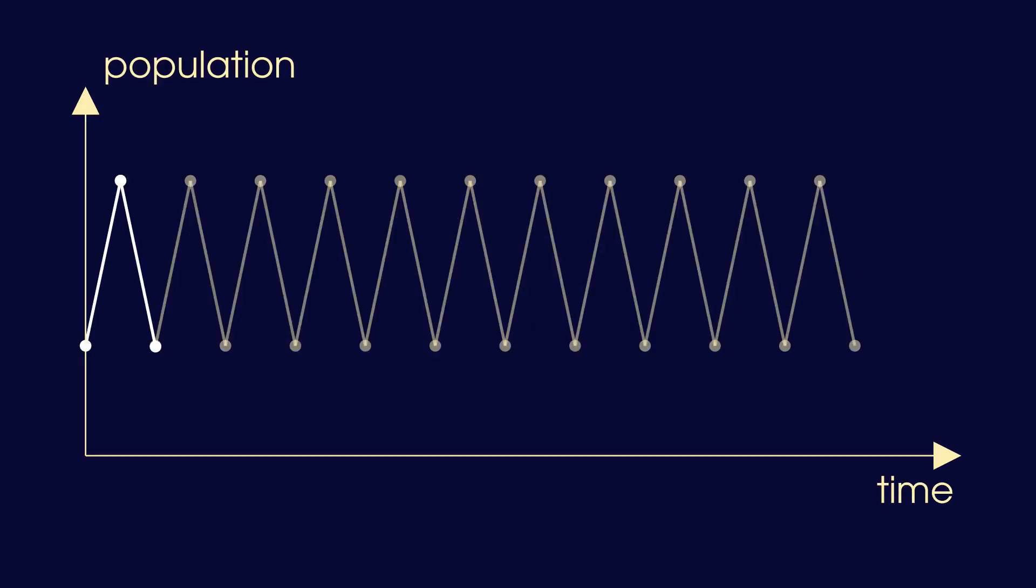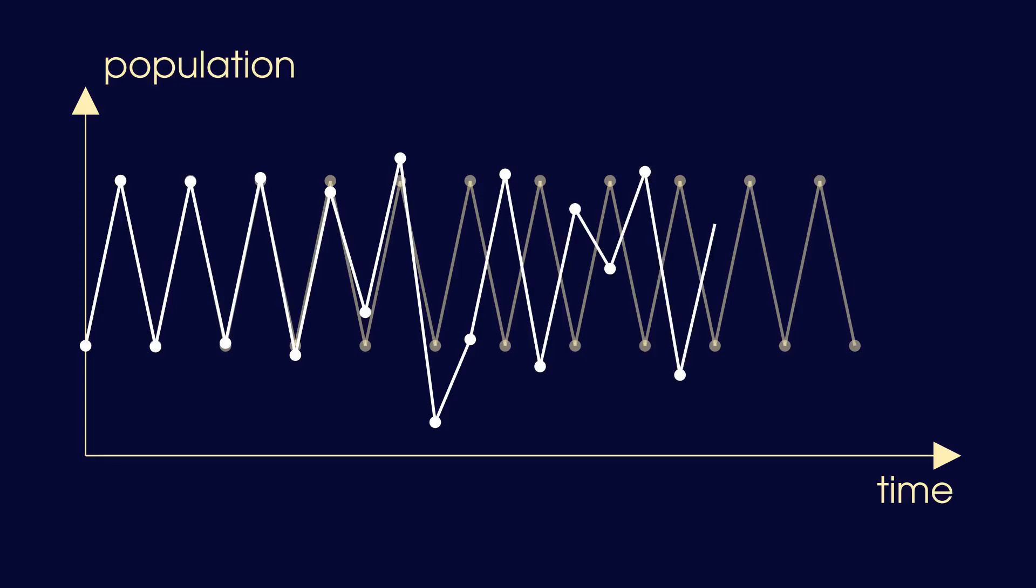Here we see the effect of a tiny change to a 2-periodic solution. At first we don't see it at all, then we see a small deviation, but after a few years the simple pattern has been completely lost and the solution has become chaotic.